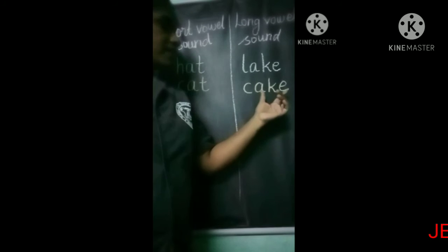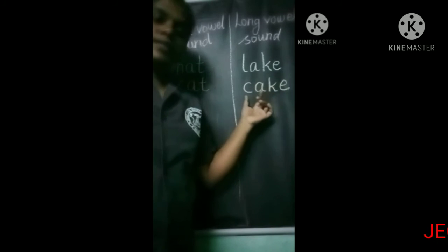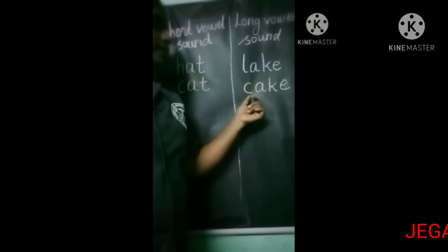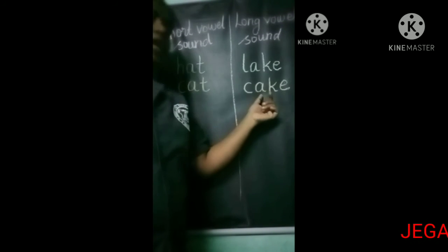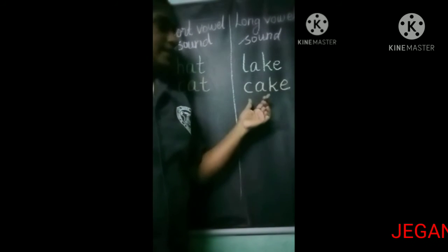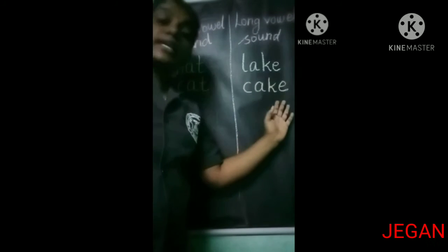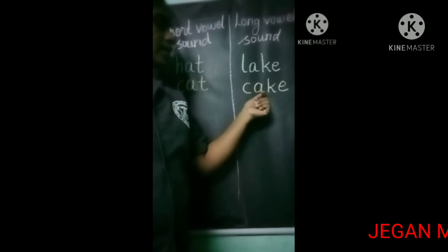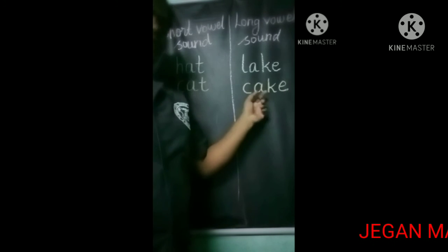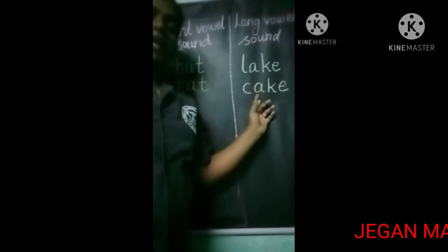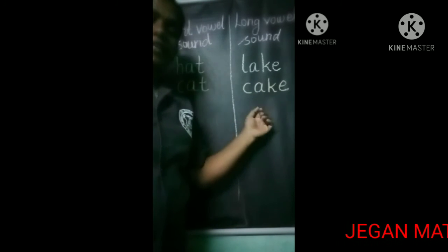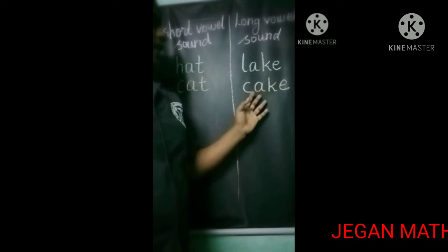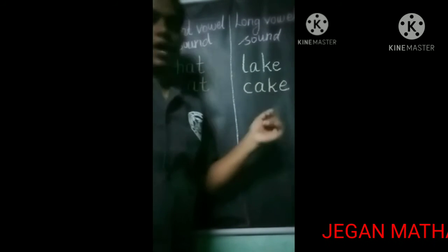Now spell the word: C-A-K-E, cake. Did you hear the name of the letter here? A — it's a long vowel sound.